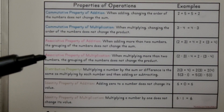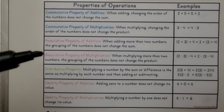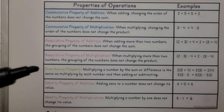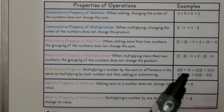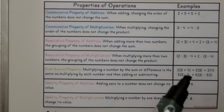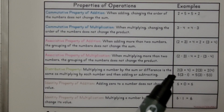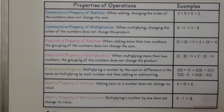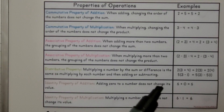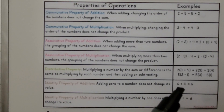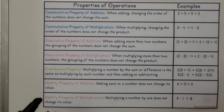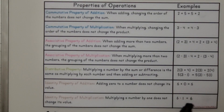The associative property also works with multiplication — we can move the parentheses around different factors and get the same product. The distributive property says that we can multiply by adding three and four together to do two times seven, or we can multiply them separately as two times three plus two times four. The identity property of addition says that zero will not change a sum; we can add any number to zero and it'll stay that number. And the identity property of multiplication says we can multiply any number by one and it'll still be that number.